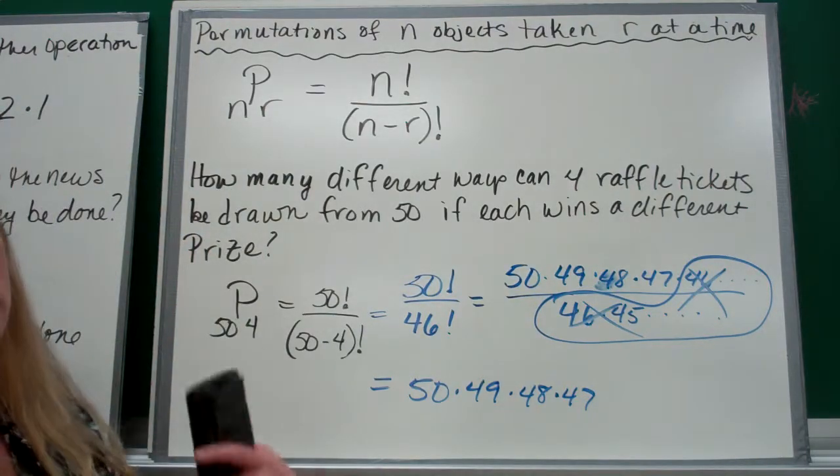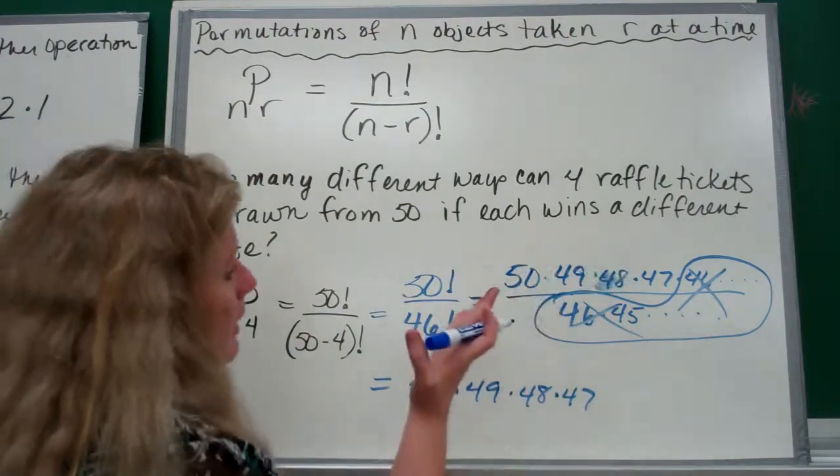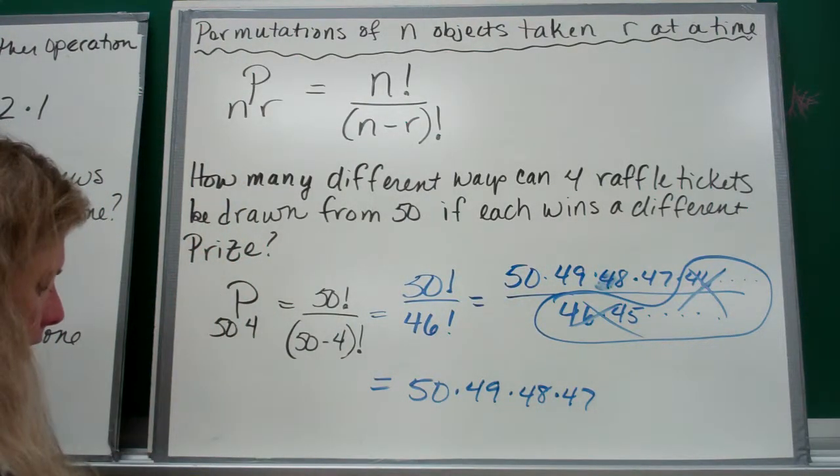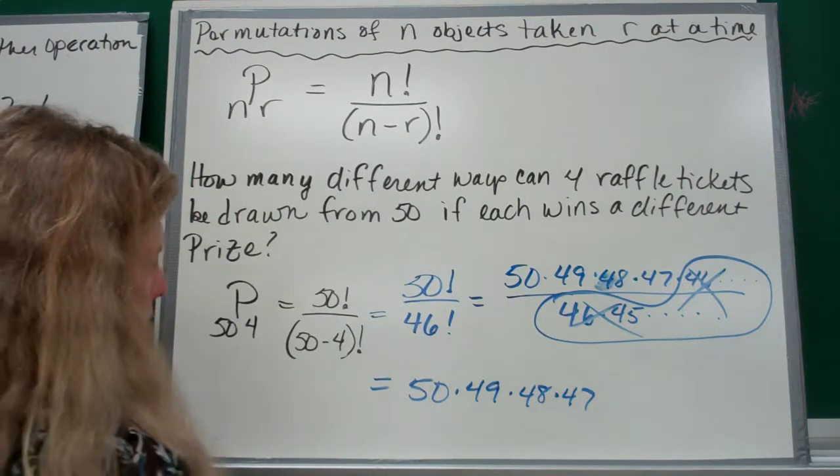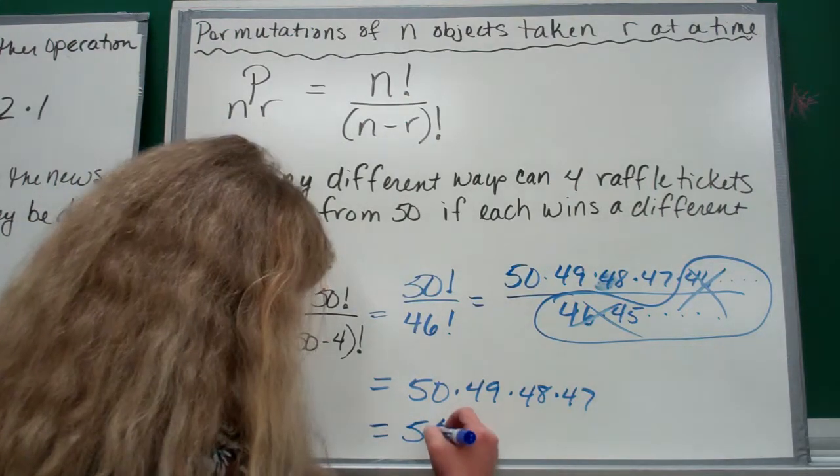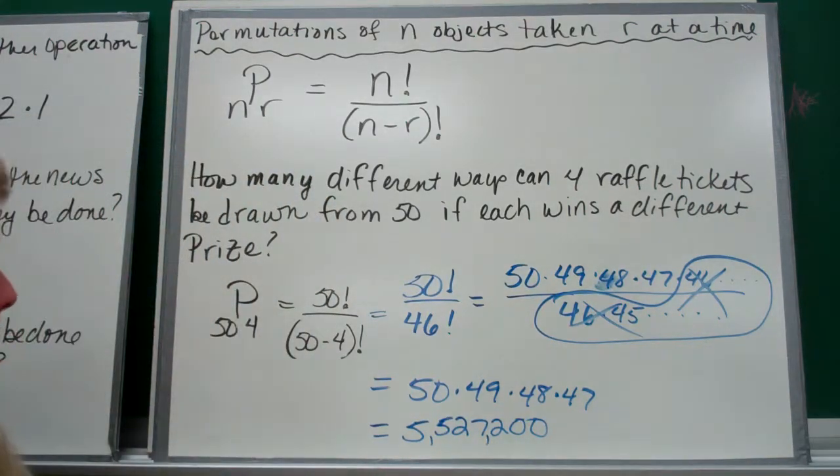So we're going to be left with 50 times 49 times 48 times 47. So even if you don't have the factorial key or you can't find it, if you remember how to do this, you can multiply those numbers together. It's 50 times 49 times 48 times 47, which is a rather large number, 5,527,200.